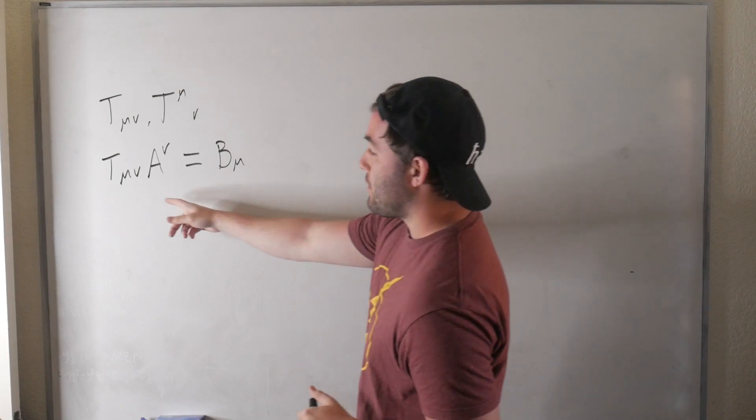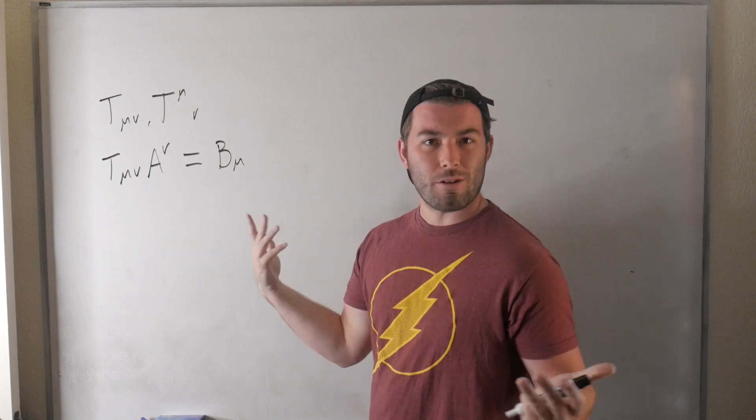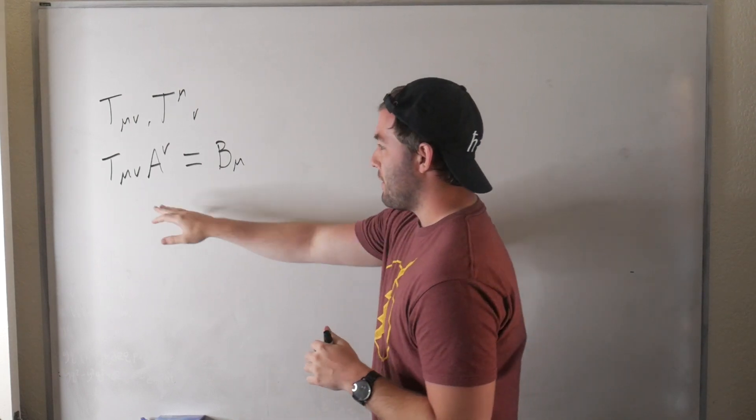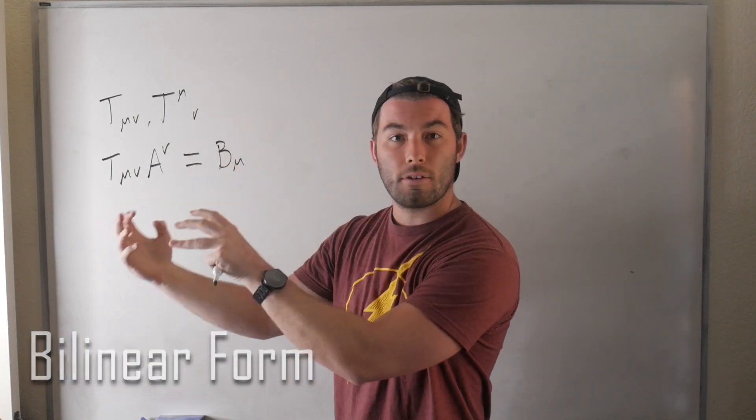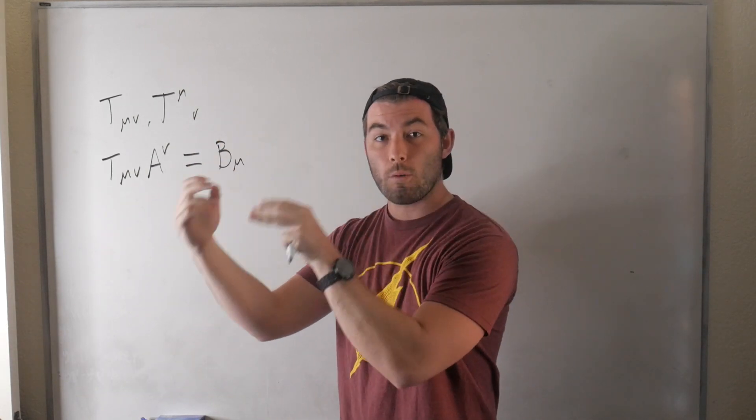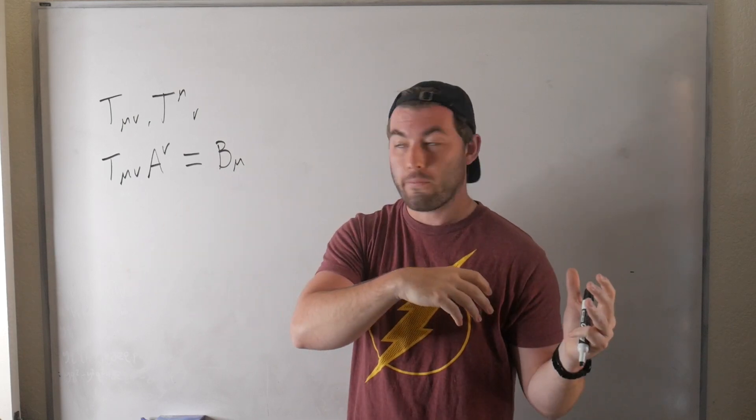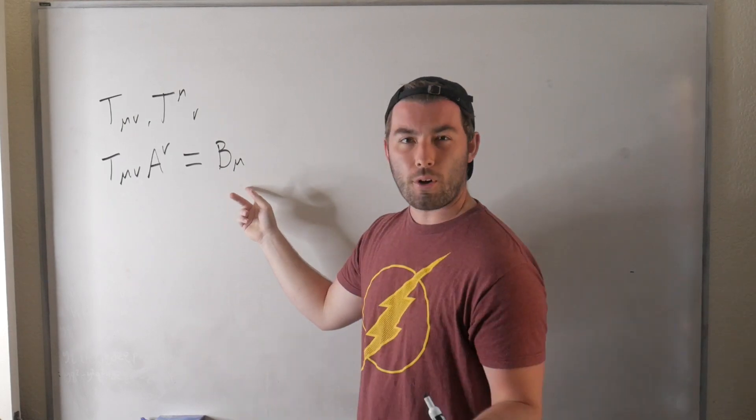Now, what you could also do is you can contract it with another vector and then you would get a scalar. So that's why this is sometimes called a bilinear form, it serves the role of taking two vectors and giving you a scalar, or taking one vector and giving you a one form, which is another word for a covariant vector.